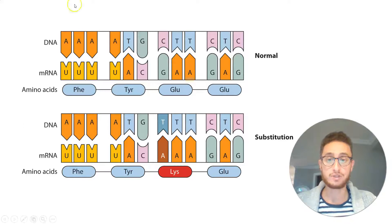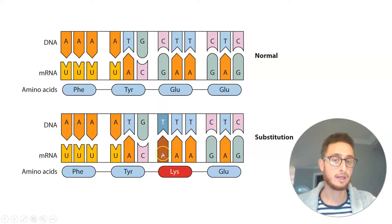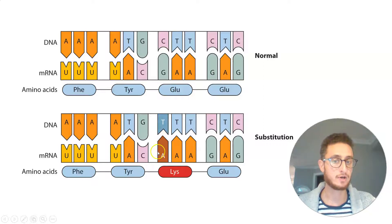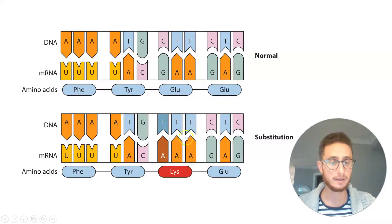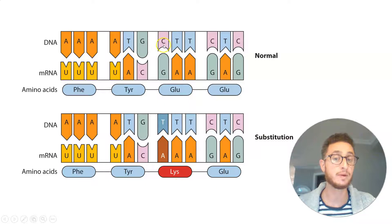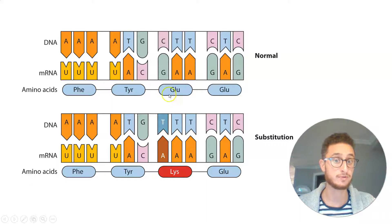Here's a normal genetic sequence at the top. Something has changed — if we look closely, it's a single letter. Where there used to be a C, we now have a T, meaning its complement is going to be an A. This codon is now changed from GAA to AAA, and that's the difference between glutamic acid and lysine. We call that a substitution — when a single base pair has changed and a new amino acid has been substituted for the old one.